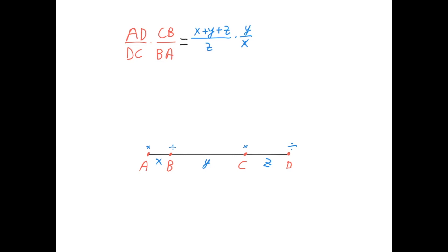Sometimes this ratio turns out to be 1, and in this case we say that points A, B, C, and D are in harmonic division. You're most likely going to see it written as (ABCD) = -1, and the negative comes from directed segments. If the direction from left to right is positive, we have a positive length divided by a negative length times a negative length divided by a negative length, so the result is negative. Either direction choice gives -1, which is the same as saying all the distances give a product of 1.